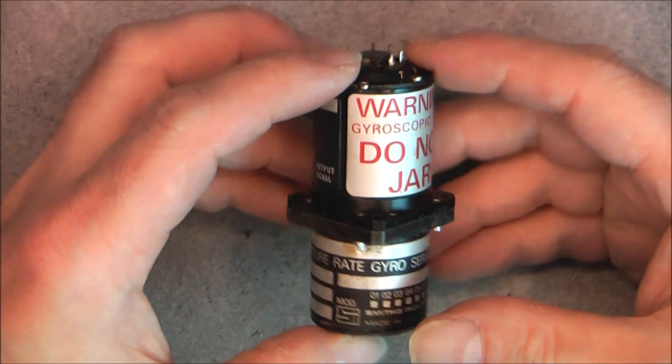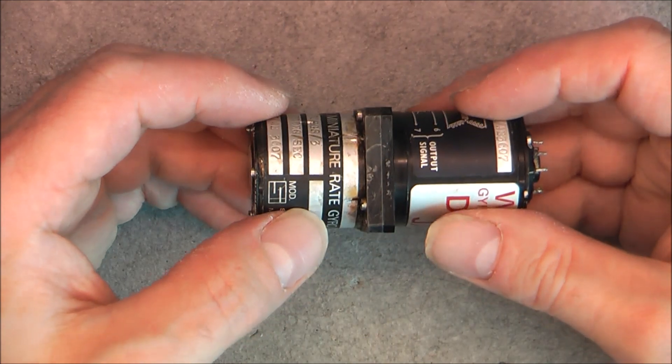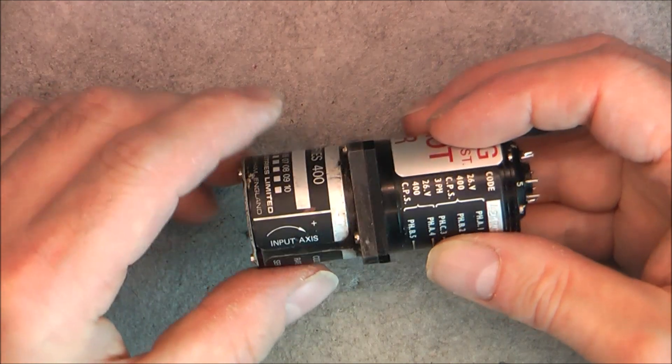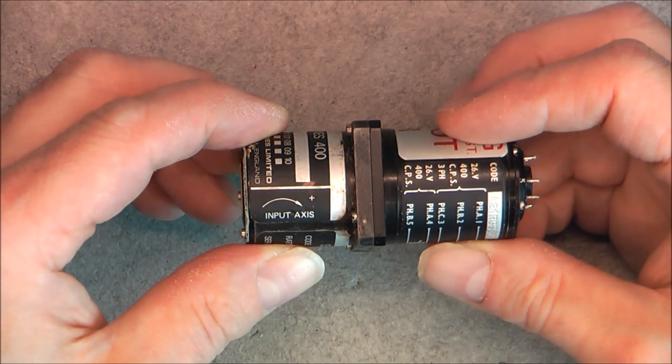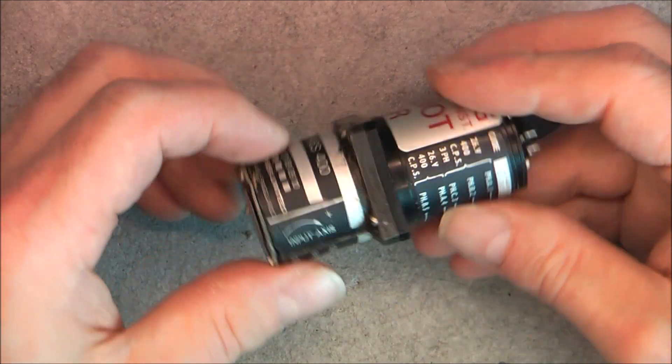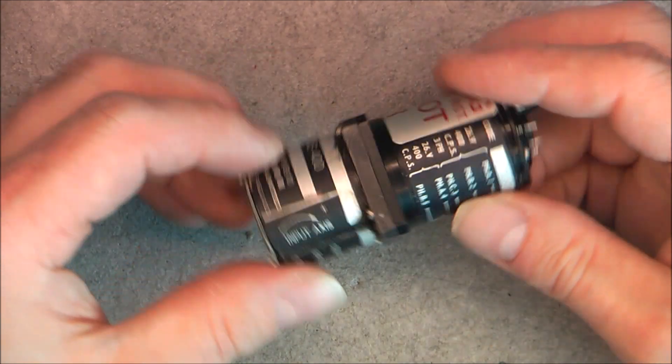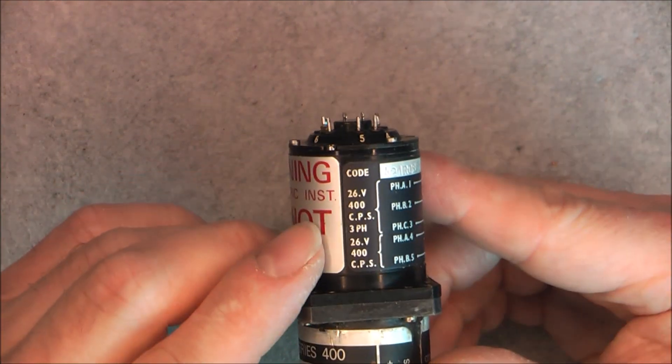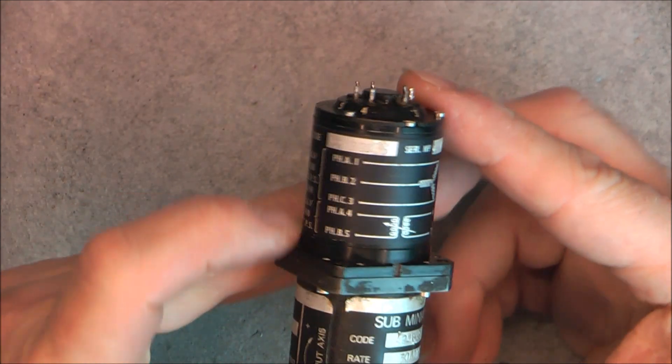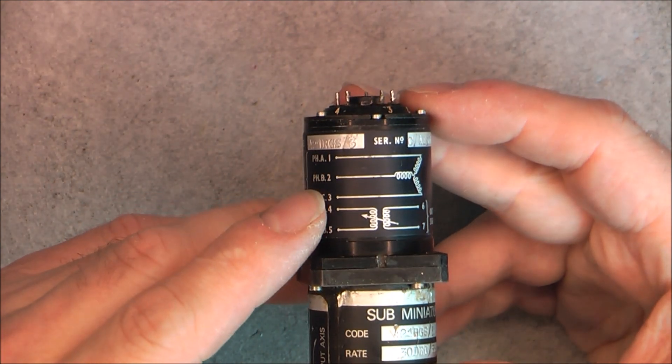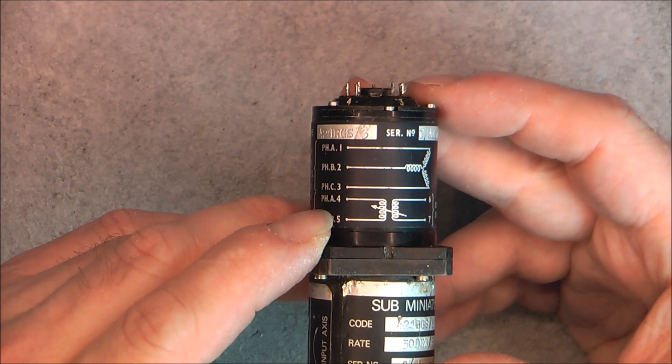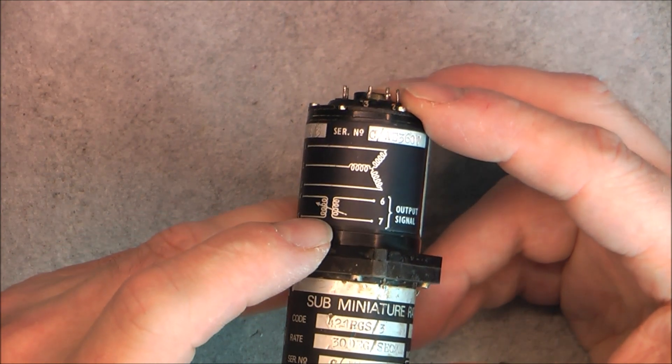So it is a very small single axis gyroscope. Input axis is written here, so in fact it was mounted like this on the Radar Antenna and it will sense movement in this direction. We have the specs here. Apparently we need three phase power, two phase power here, and we will have an output here.